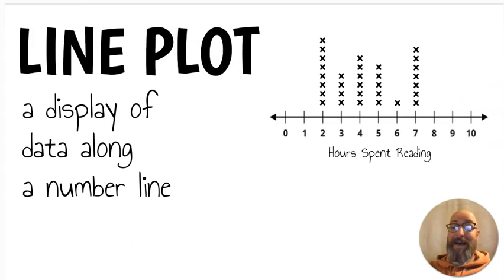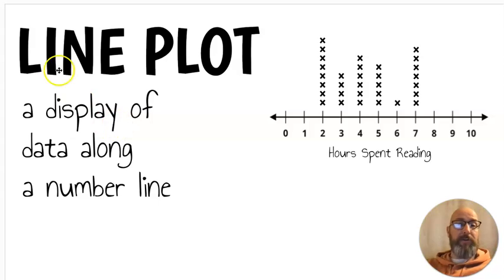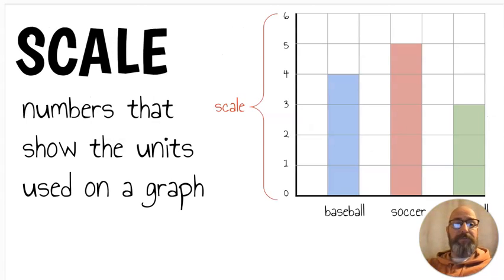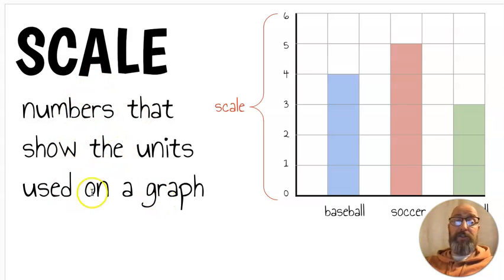We have another one called a line plot. A line plot is a display of data along a number line. In this line plot, it's measuring hours spent reading. We asked students how many hours they spent reading over the break — we see that four students spent three hours, and one student spent six. We can count the x's to find out. Next we have a scale. A scale is numbers that show the units used on a graph. In this bar graph measuring favorite sports, we can count the scale: zero, one, two, three, four, five, six — so our scale is counting by ones.